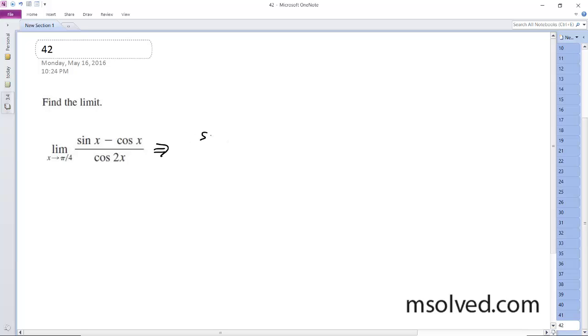We're going to use a trig identity. Sine of x minus cosine of x, and cosine of 2x can actually be converted to cosine squared of x minus sine squared of x. And this is useful because we're going to be able to do some cancellation here.